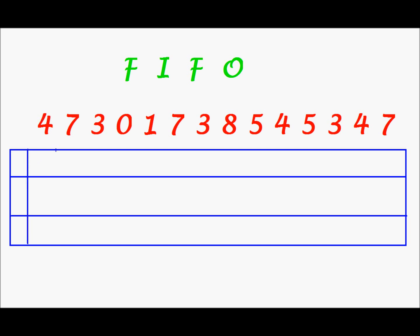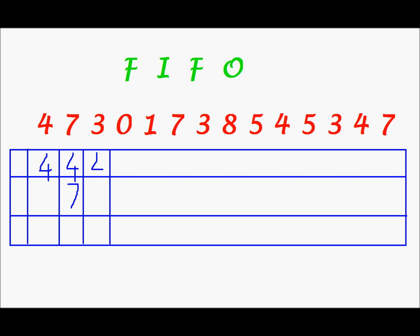Next, I have to bring in 4 and I will place 4 in one of these frames. Next, I have to bring in 7, and 4 will be where it is. In one of these empty blocks, I shall place 7. Next, I have to place 3. And 4 will be where it is, 7 will be where it is, and in this empty frame, I shall place page 3.